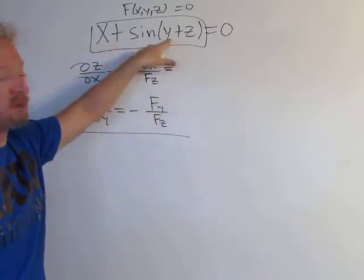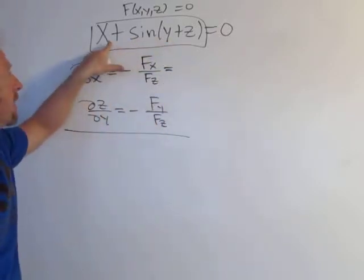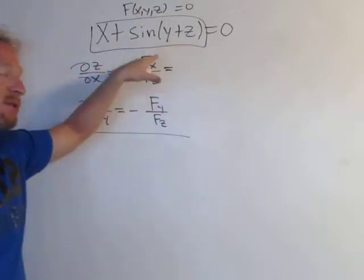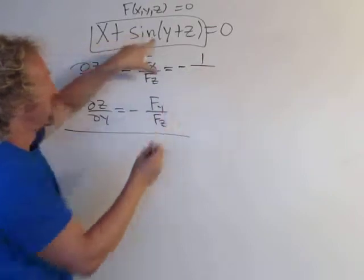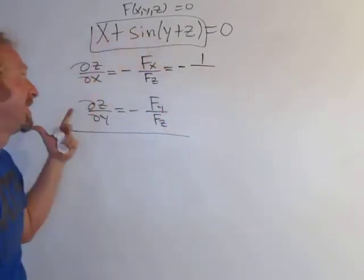We're taking the partial of this with respect to x. All of the y's and z's are constants, so the derivative of x is one and the derivative of this is zero. That's it—pretty easy.